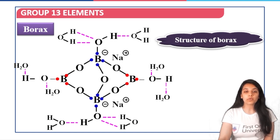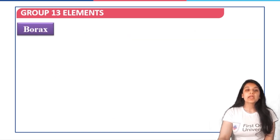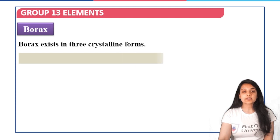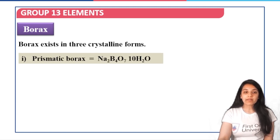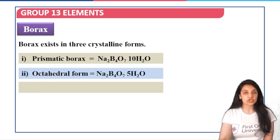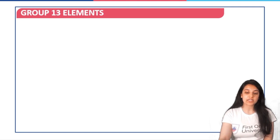Borax exists in three crystalline forms: prismatic borax with formula Na2B4O7·10H2O, octahedral borax with formula Na2B4O7·5H2O, and borax glass which is simply Na2B4O7 with no water of crystallization. These three crystalline forms are very important to remember.